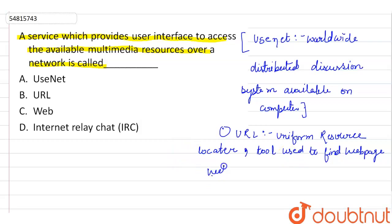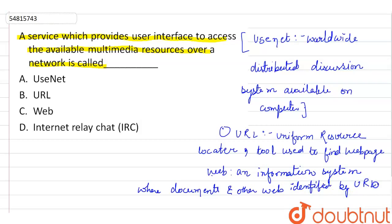Web is basically an information system where documents and other web resources are identified by Uniform Resource Locator. So we have to find a service. Web is identified by the uniform resource locator.